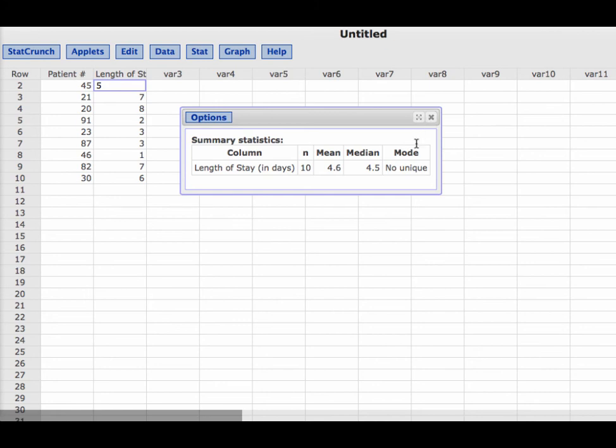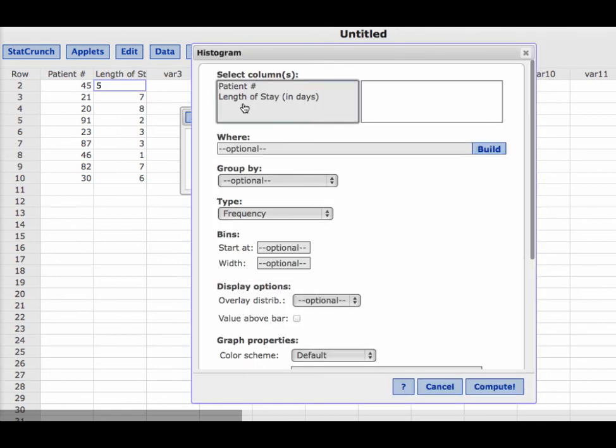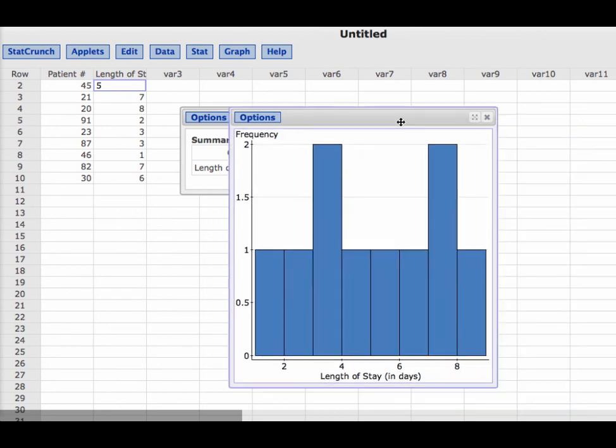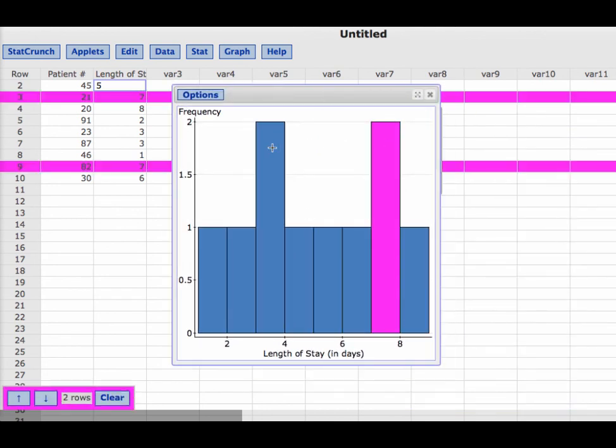So what I would like to show you is how else could we calculate the mode. Remember that the mode is the frequencies. So if I want to look at the frequency of values, we know that frequencies can be illustrated using a histogram. Frequency is a numerical variable or data. So let's create a histogram for length of stay and hit compute.